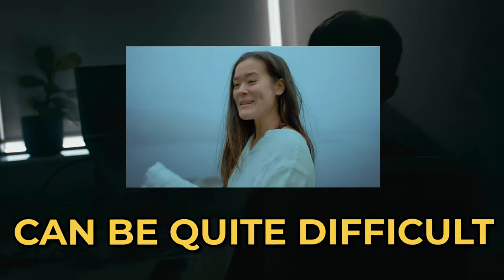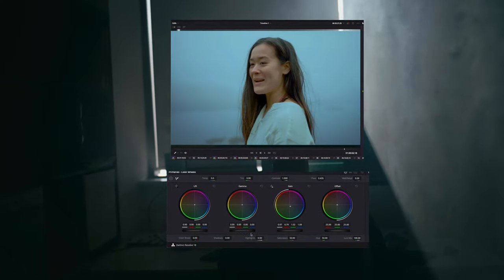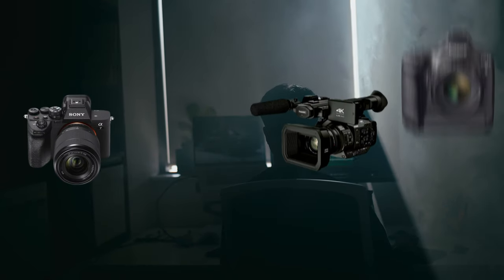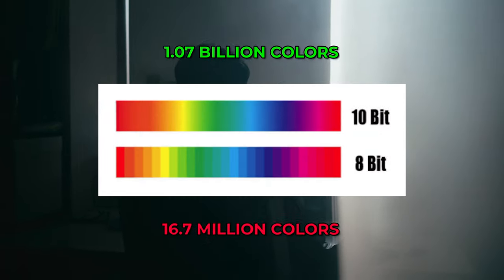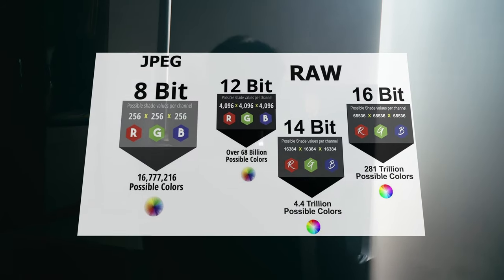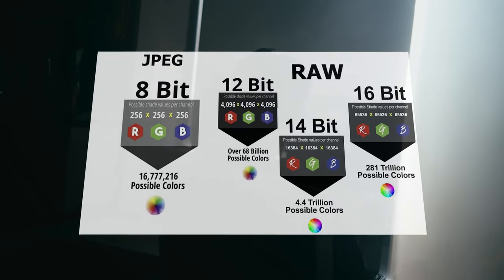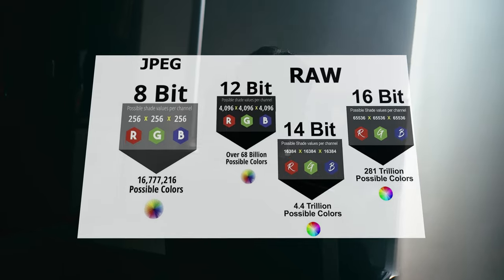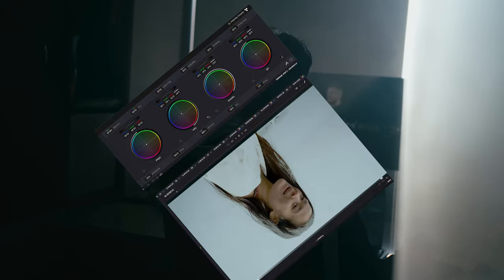Colour grading 8-bit footage can be quite difficult, as 8-bit footage is very prone to breaking up. Cameras that can only shoot in 8-bit cannot capture as many colours as cameras that can shoot in 10-bit, 12-bit or even 16-bit colour. This means it's a lot harder to do colour separations, and if you push the image too far, it'll end up breaking up and begin to get very noisy.